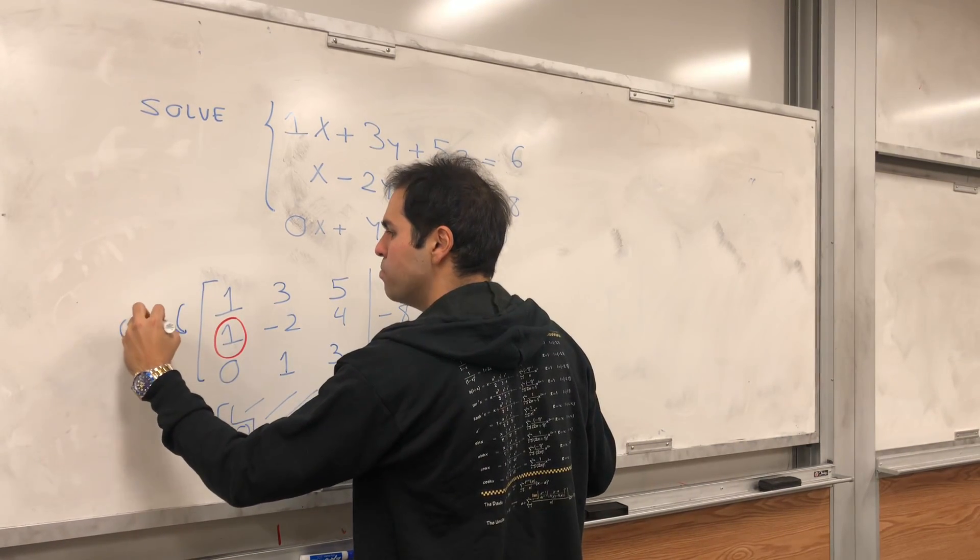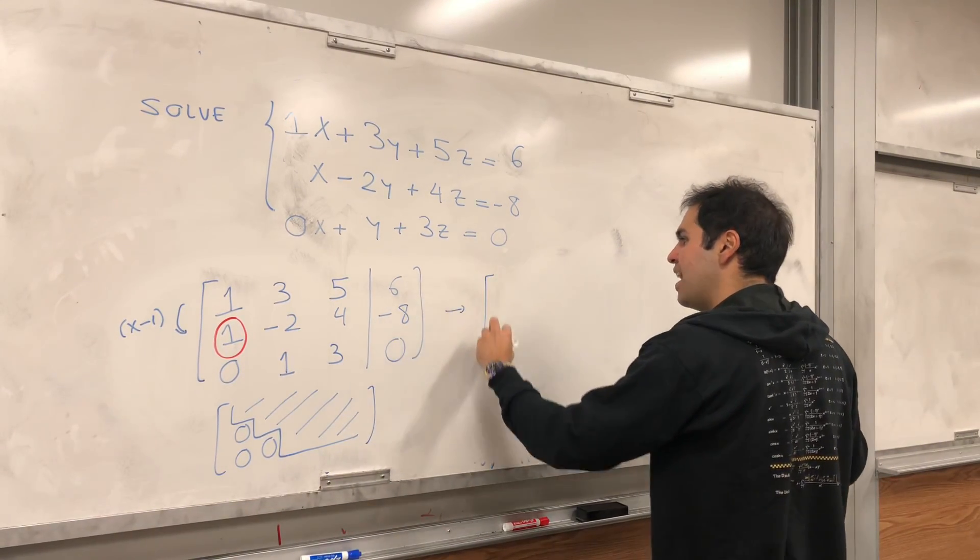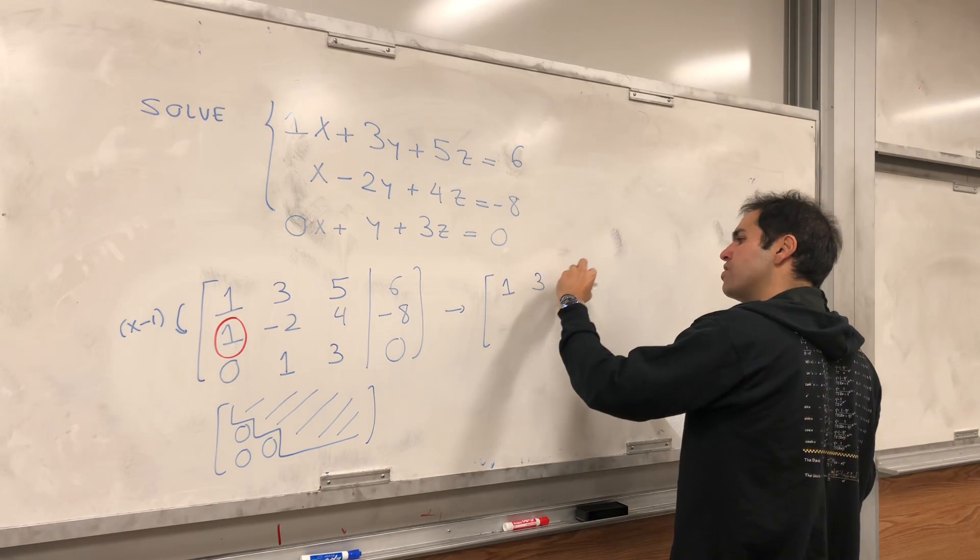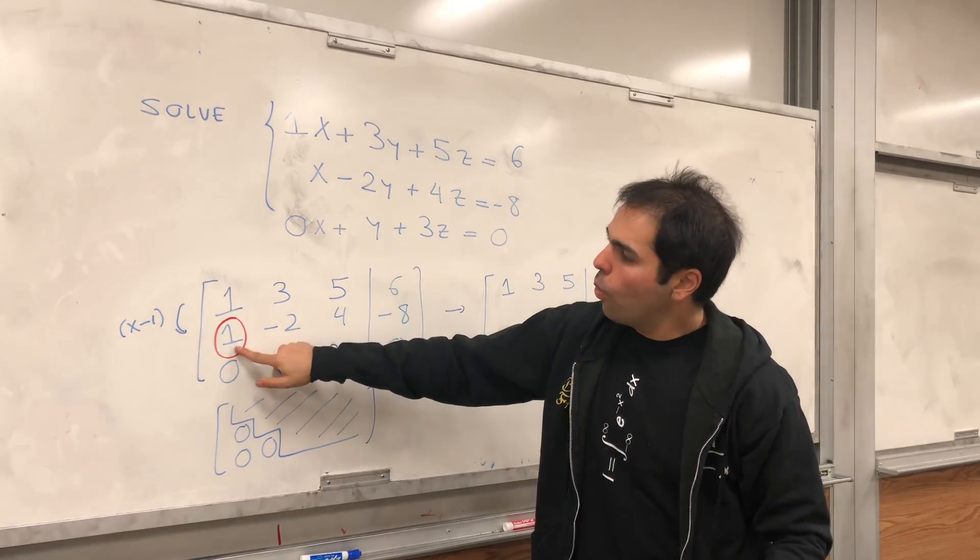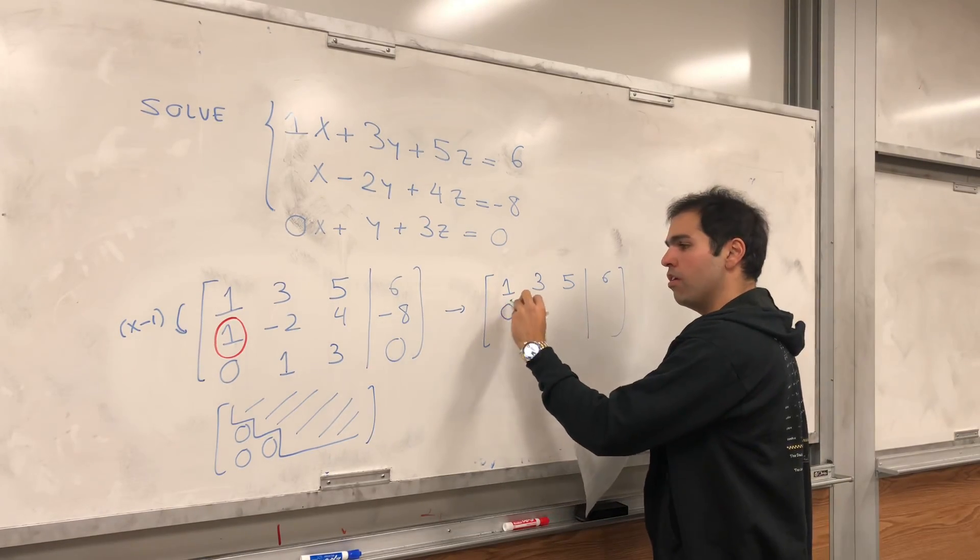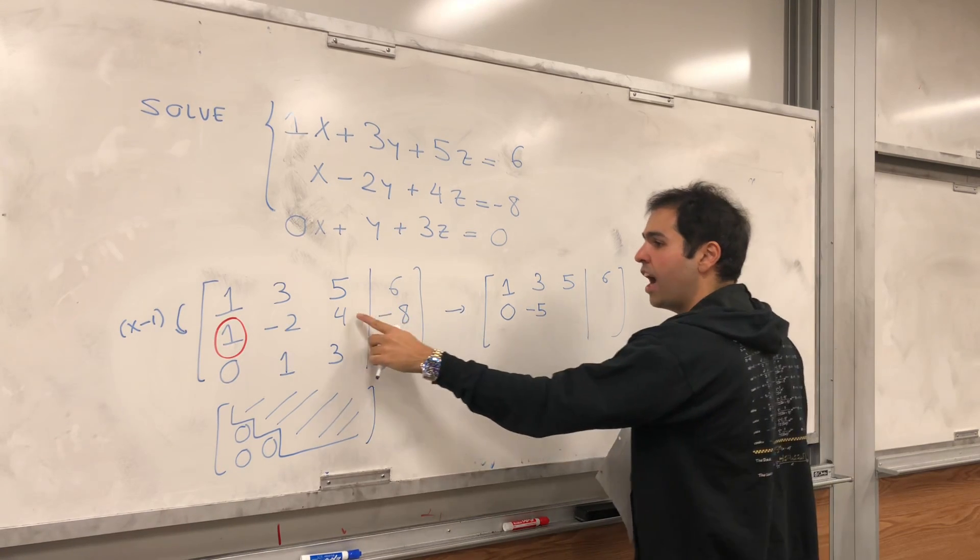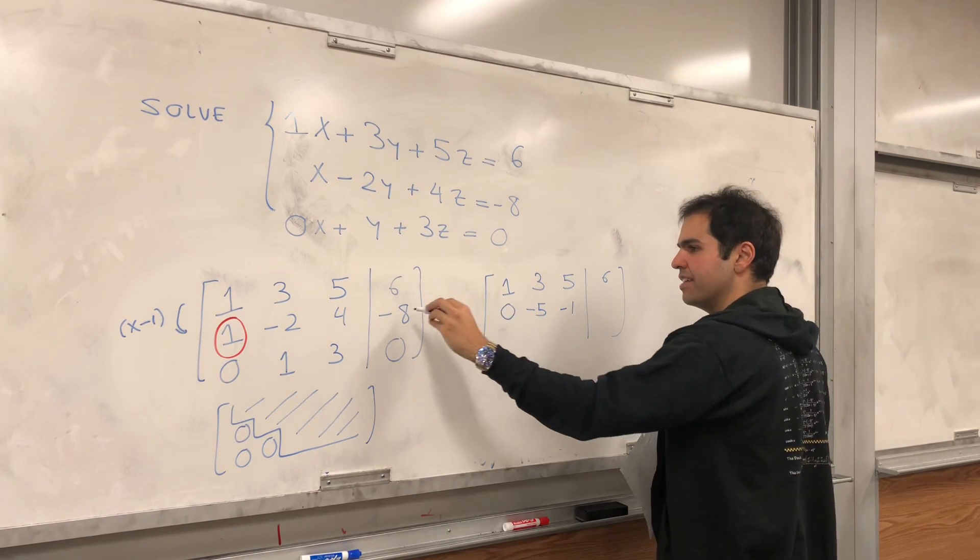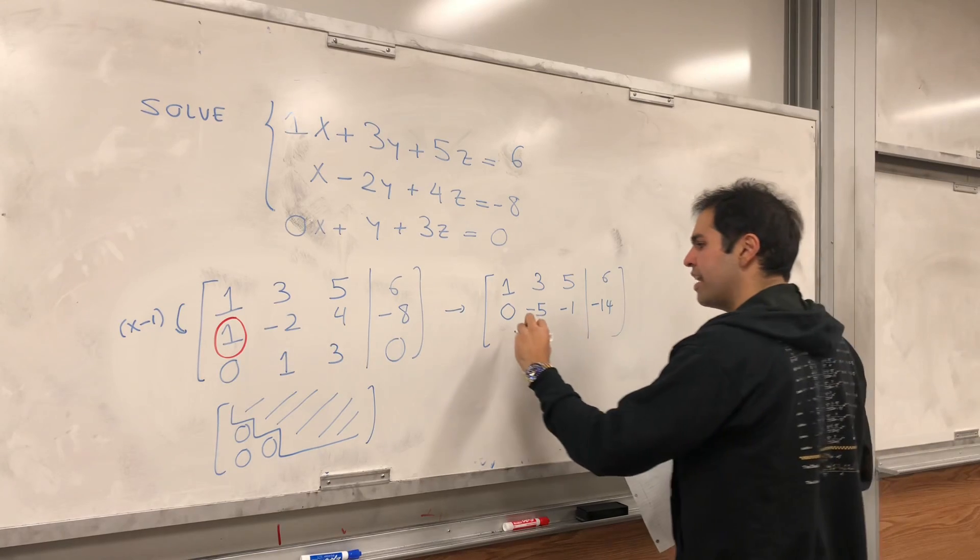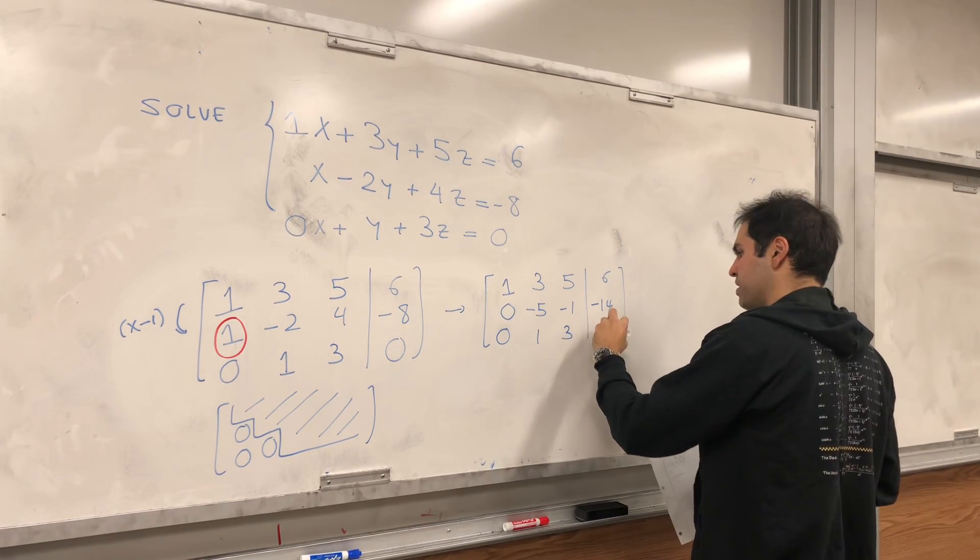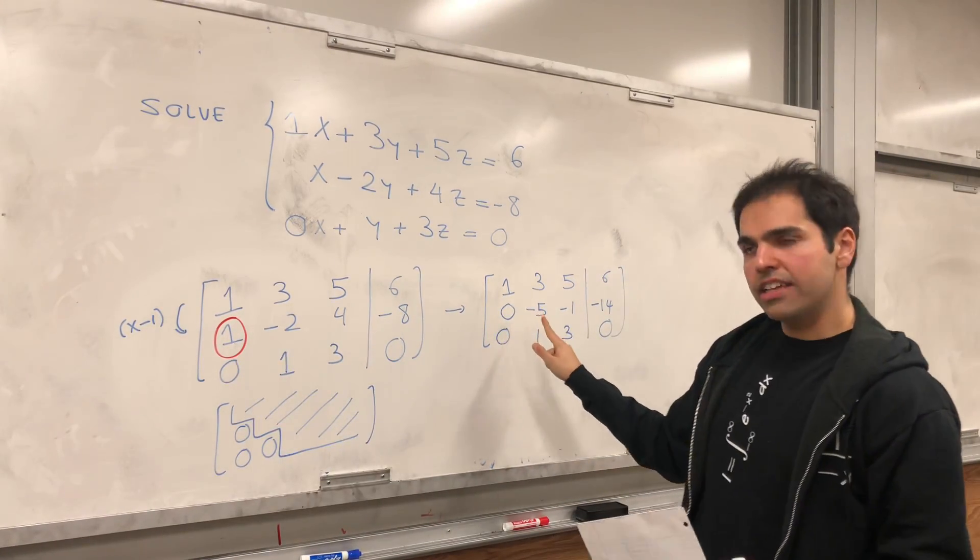So, in other words, let's multiply the first row by minus 1 and add it to the second row. Then, what do we get? Well, the first row is unchanged, 1, 3, 5, 6. And then the second row becomes 1 minus 1, which is 0, which is what we wanted. Minus 2 minus 3, which is minus 5. 4 minus 5, which is minus 1. And minus 8 minus 6, which is minus 14. And then the last row is unchanged, 0, 1, 3, 0. And notice this is good. We wanted this 1 to be a 0, and that's what we achieved.